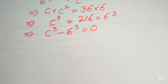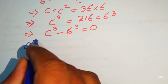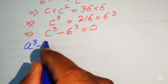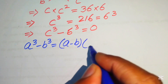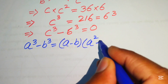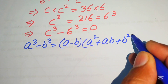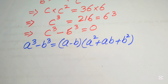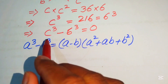These two terms are now in cubic form, so we apply the difference of cubes formula. The formula states: a cubed minus b cubed equals (a minus b) times (a squared plus ab plus b squared). This is our cubic formula, and we substitute the above values into it.